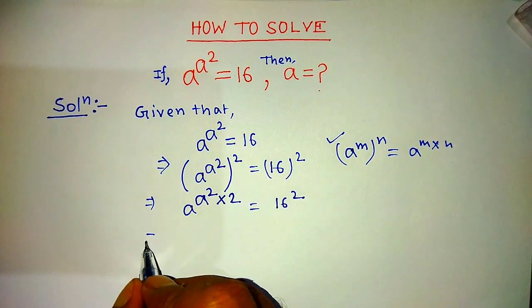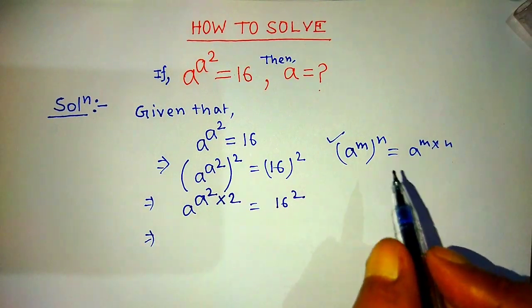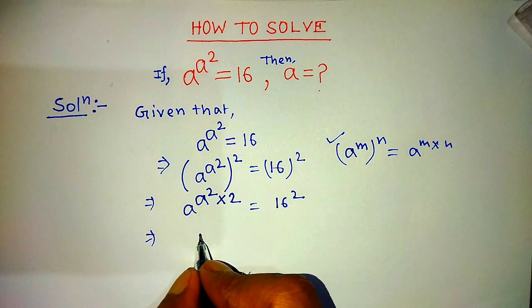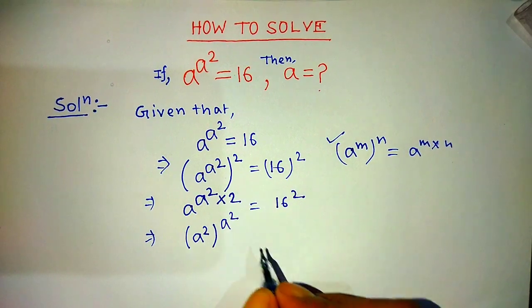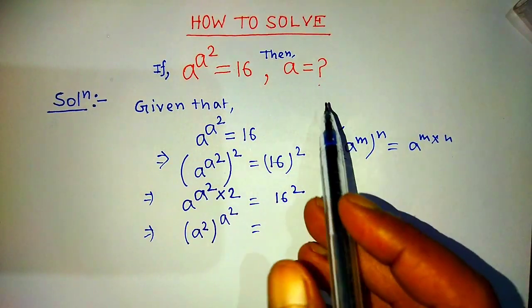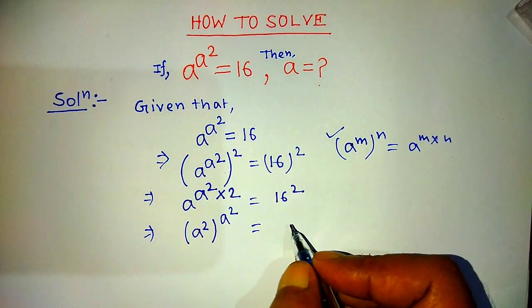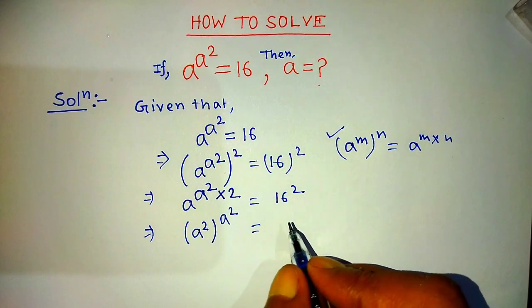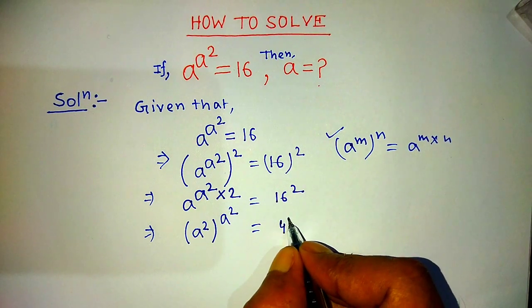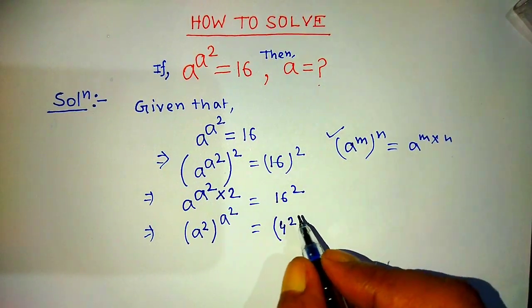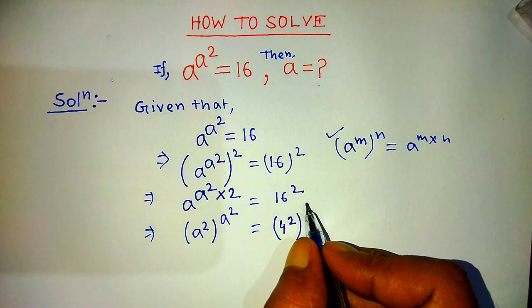Again we apply this formula on the left hand side. Then we can write a to the power 2, whole to the power a squared, is equal to — and to find the value of a we write 16 in exponential form. So in the place of 16, we write 4 squared, and again we take the power 2.